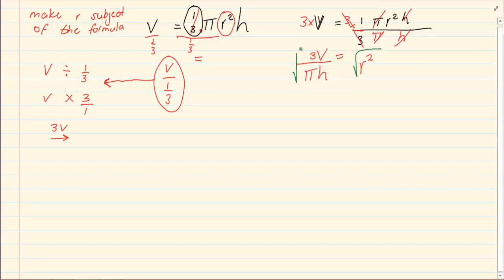What you do on one side you do on the other side. Now the square can cancel the root leaving us with r. There is nothing to cancel this root so you cannot get rid of it. So your final answer is r equals the square root of 3V over pi h.